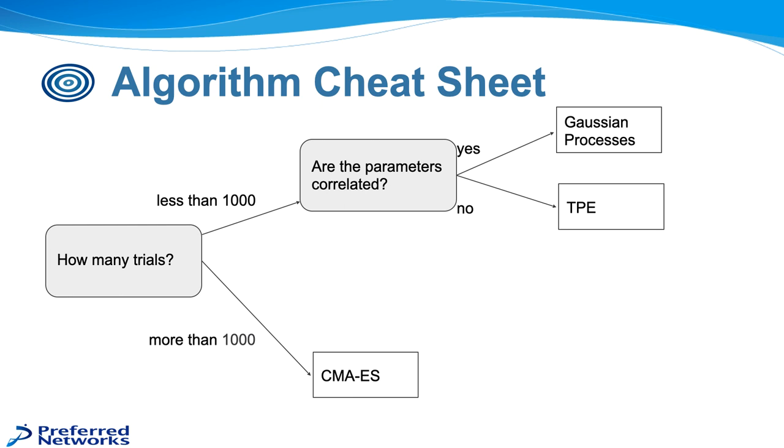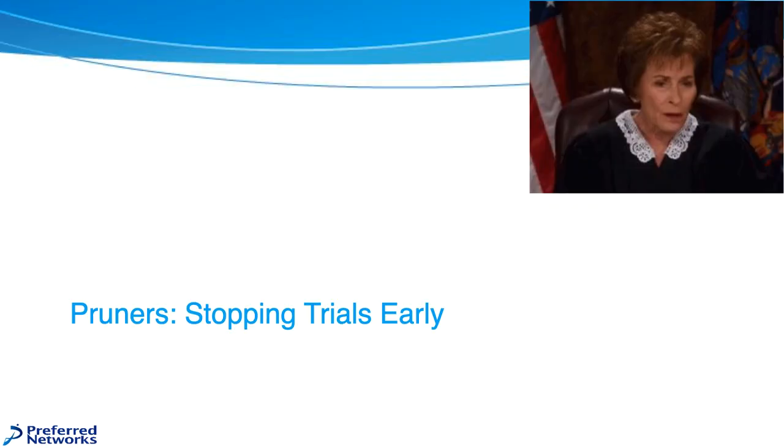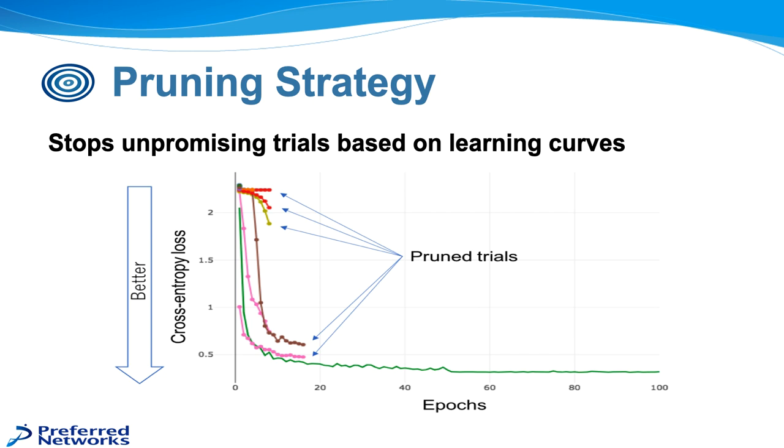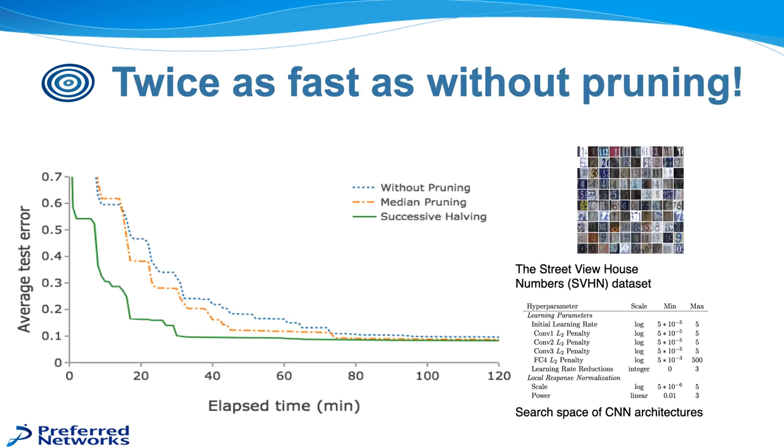So next, talking about pruners and stopping trials early. The pruning strategy basically is that for some trials, they're going to have a slow start and never be able to make up that start. So there are a number of pruning algorithms within Optuna that will then terminate those unpromising trials early so that that compute time can be dedicated to more promising trials. As an example for this, we have the Street View House Numbers data set where we worked with for a bit. And using successive halving as the pruning algorithm, we found it to be twice as fast in optimization using pruning as it was without pruning.